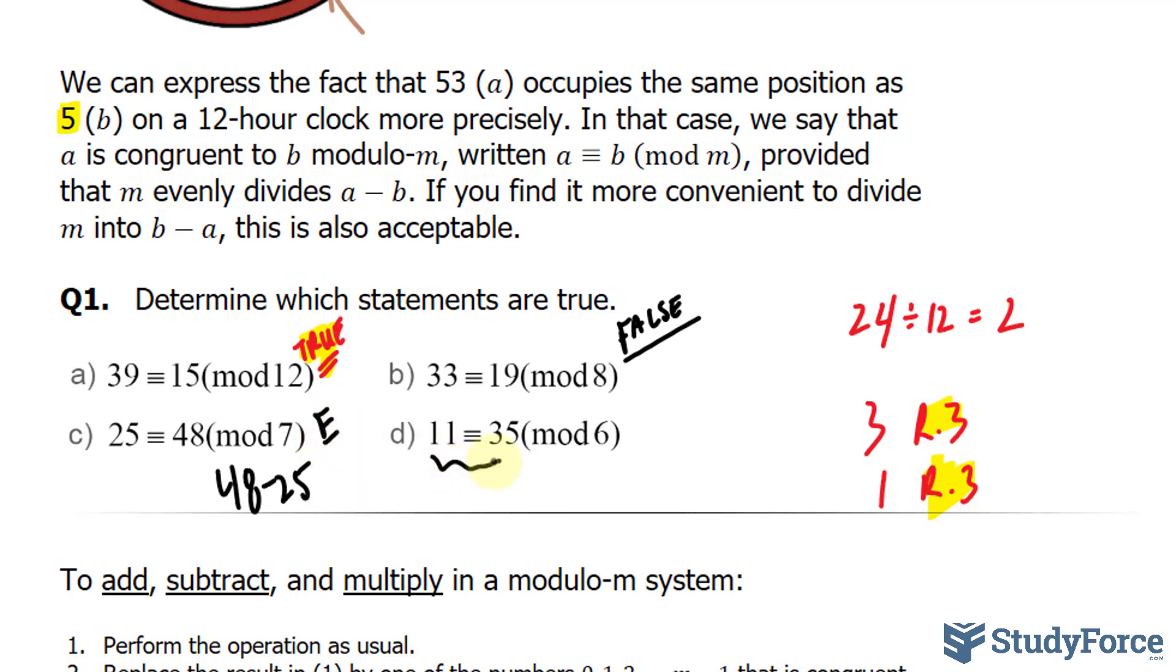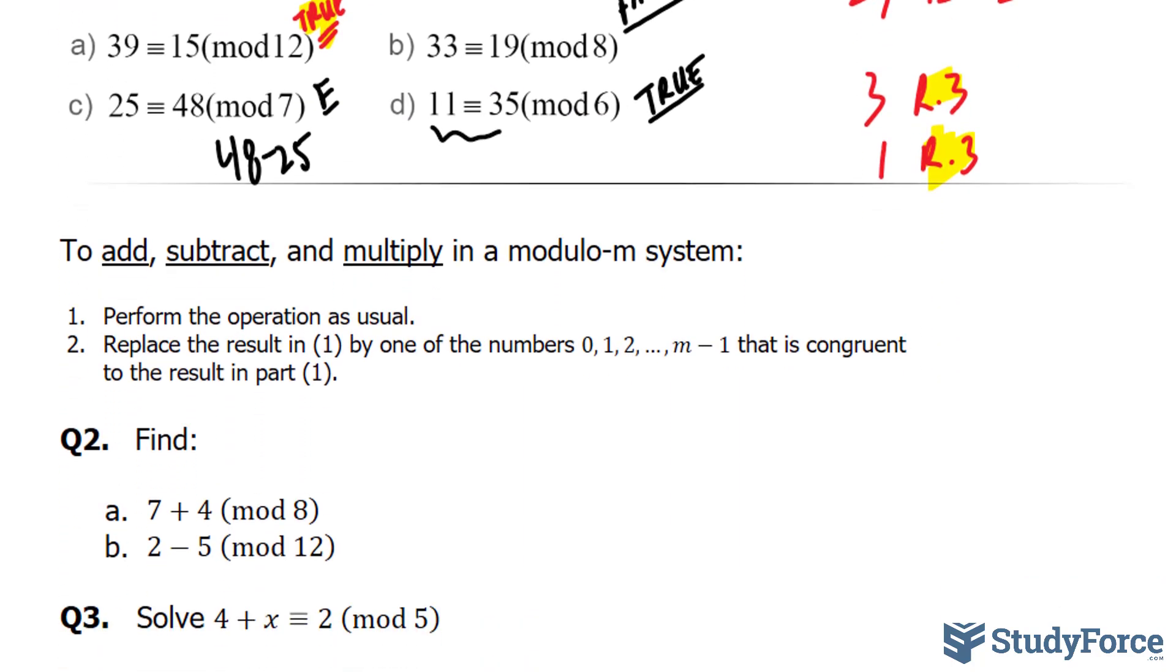Are these two congruent? We have 11 and 35. 35 minus 11 gives us 24. 24 divided by 6, we end up with 4. Now because it's divisible by 6, we will say that it is true. Let's move on to the next exercise.